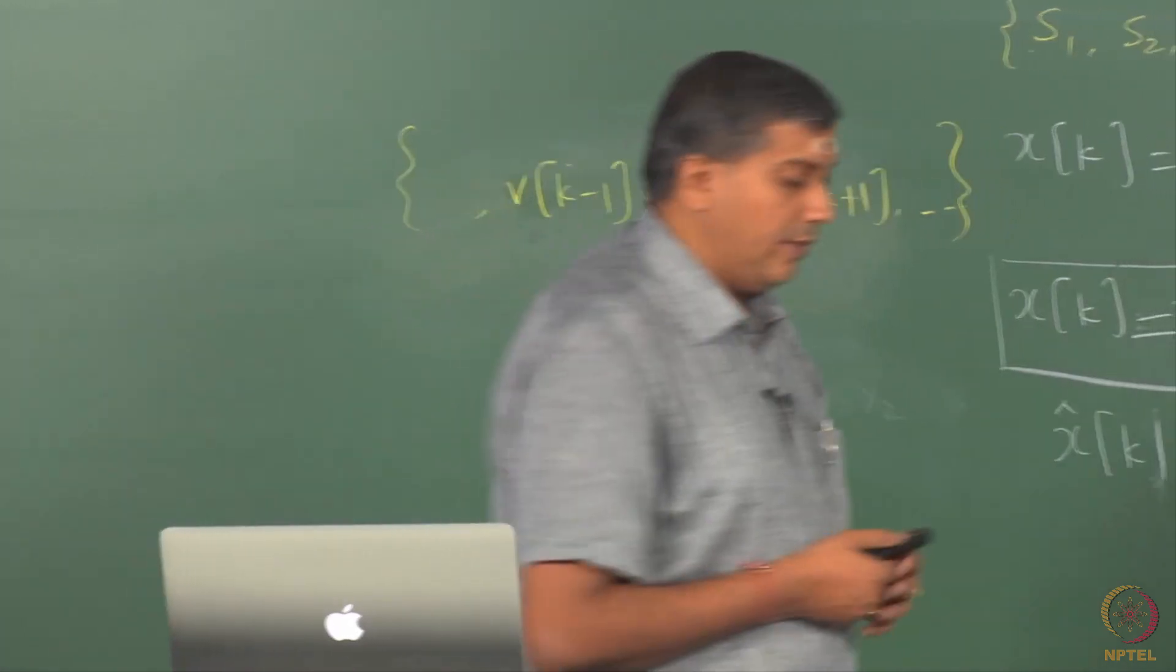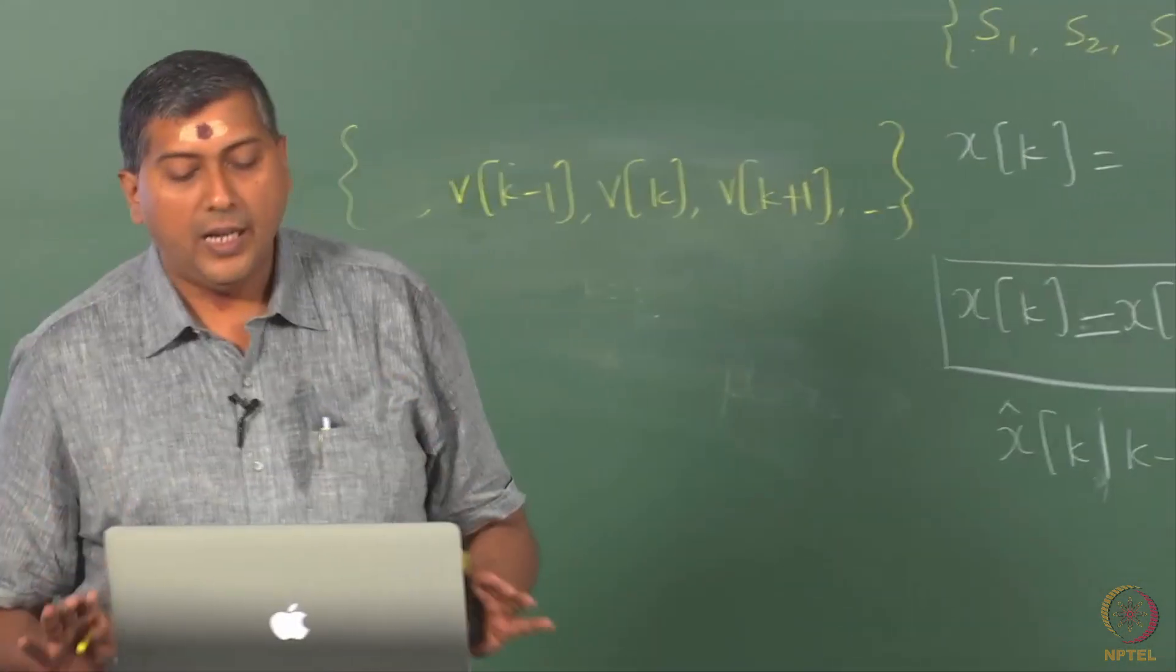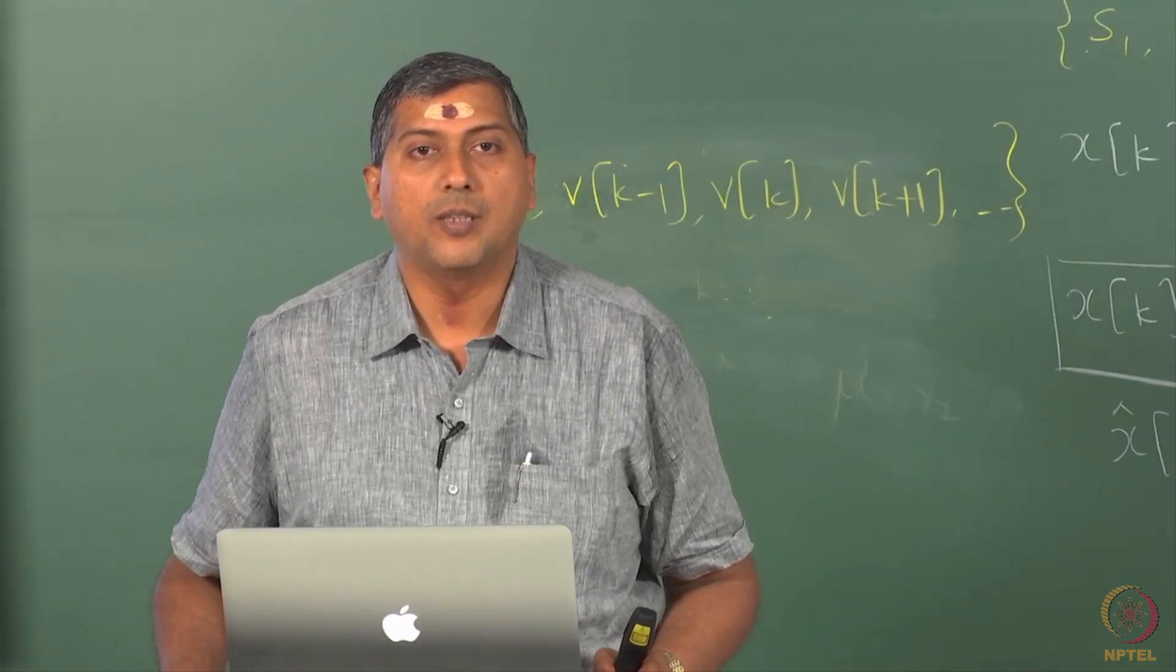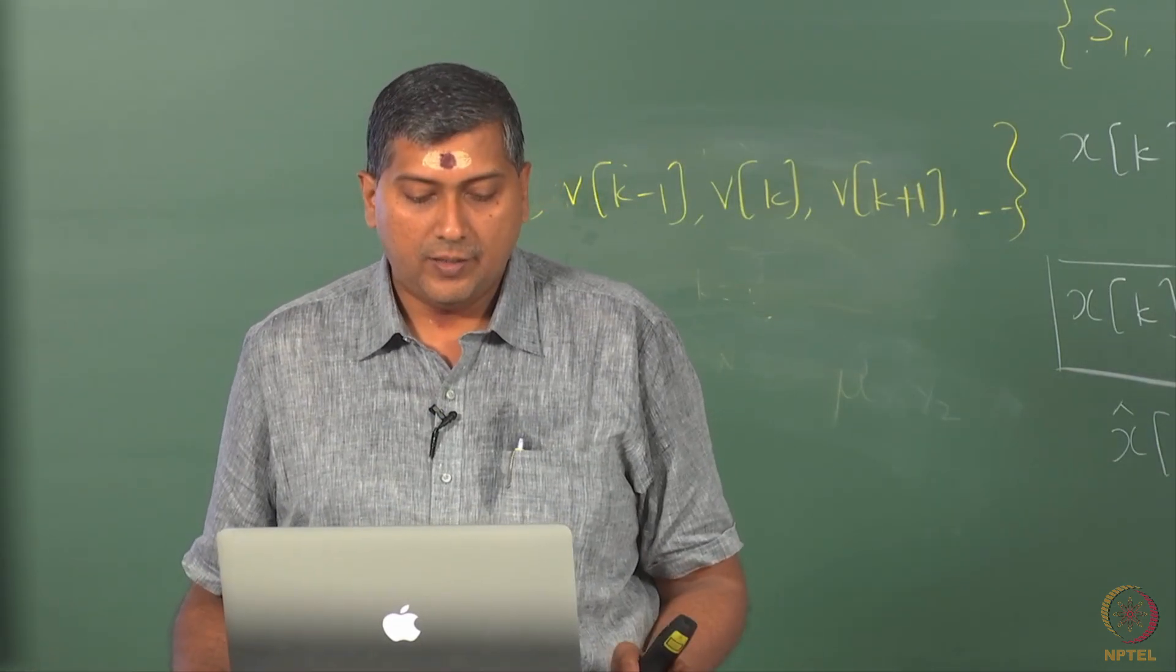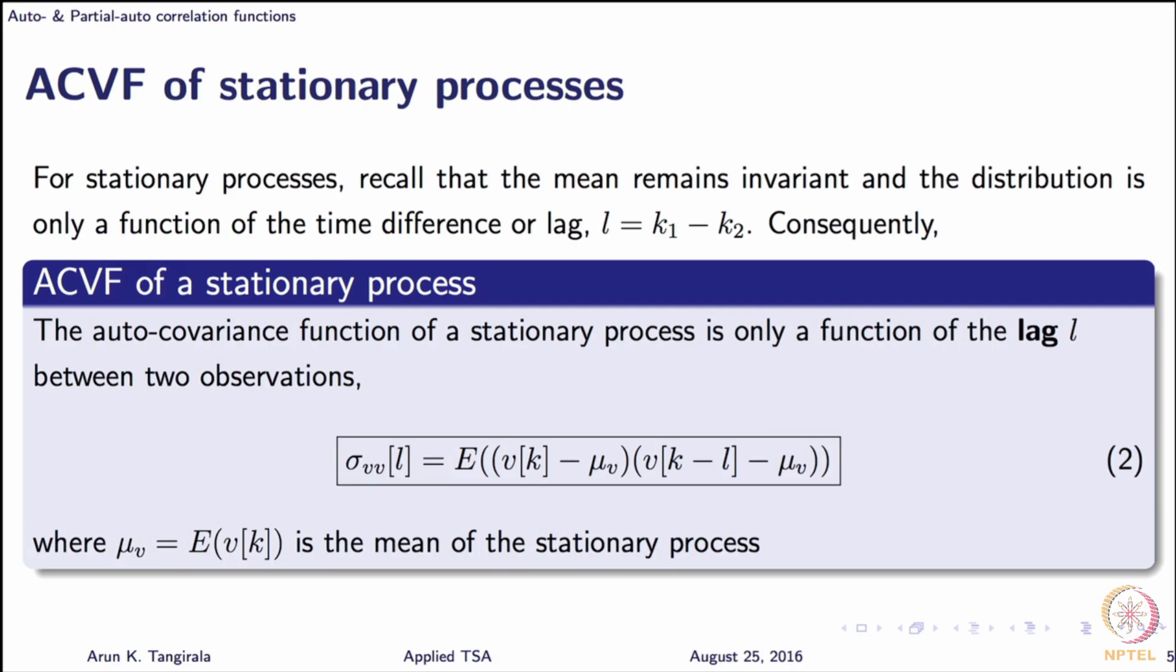Therefore, we satisfy ourselves, we work with a slightly relaxed version of this definition where we drop the subscripts on mu, and essentially we say now sigma is a function of the lag L rather than k1 and k2. But if you have a non-stationary process, you should fall back to the original definition which we will be using at this moment and for many lectures to come. So now the auto-covariance function sigma_vv at L is nothing but expectation of v[k] minus mu times v[k-L] minus mu.